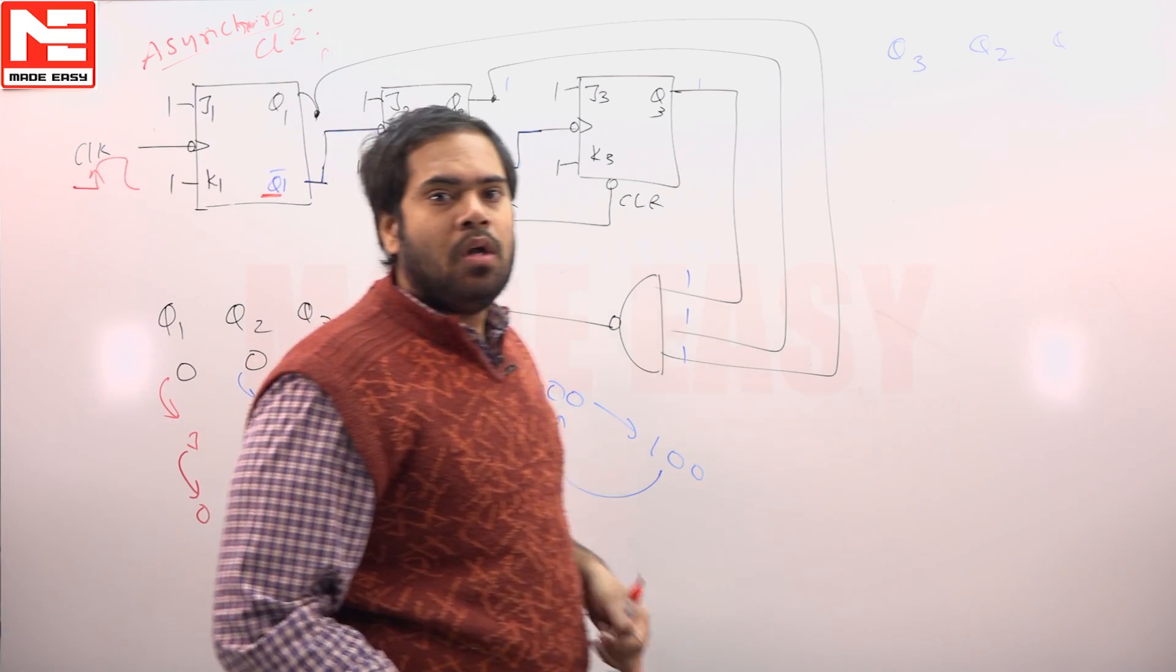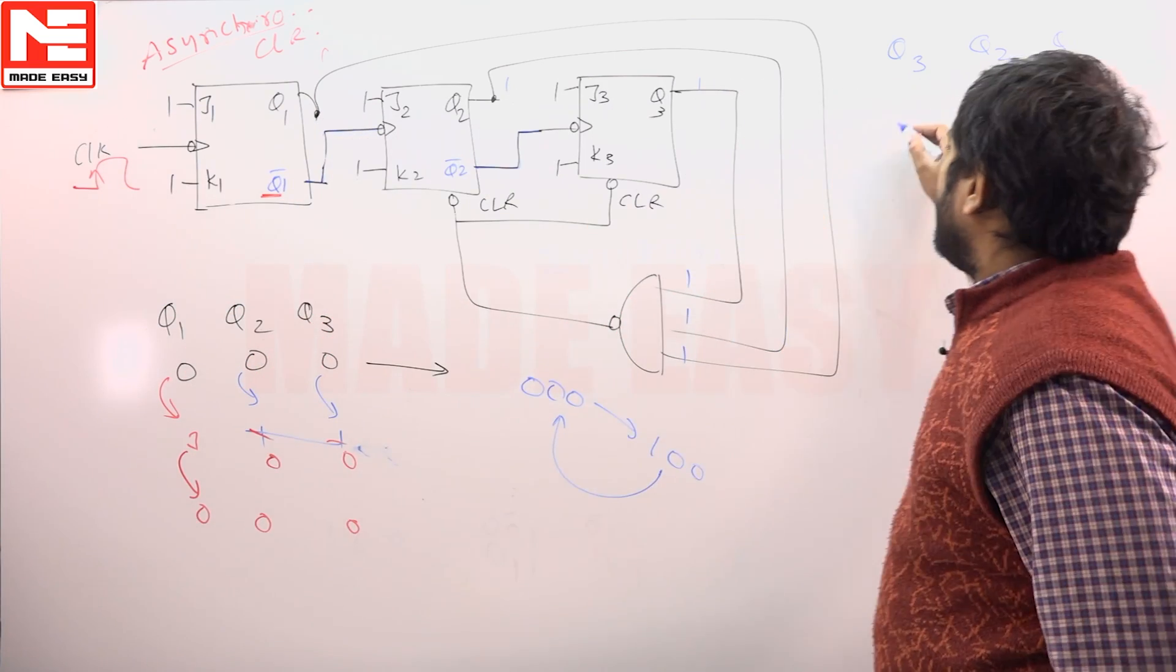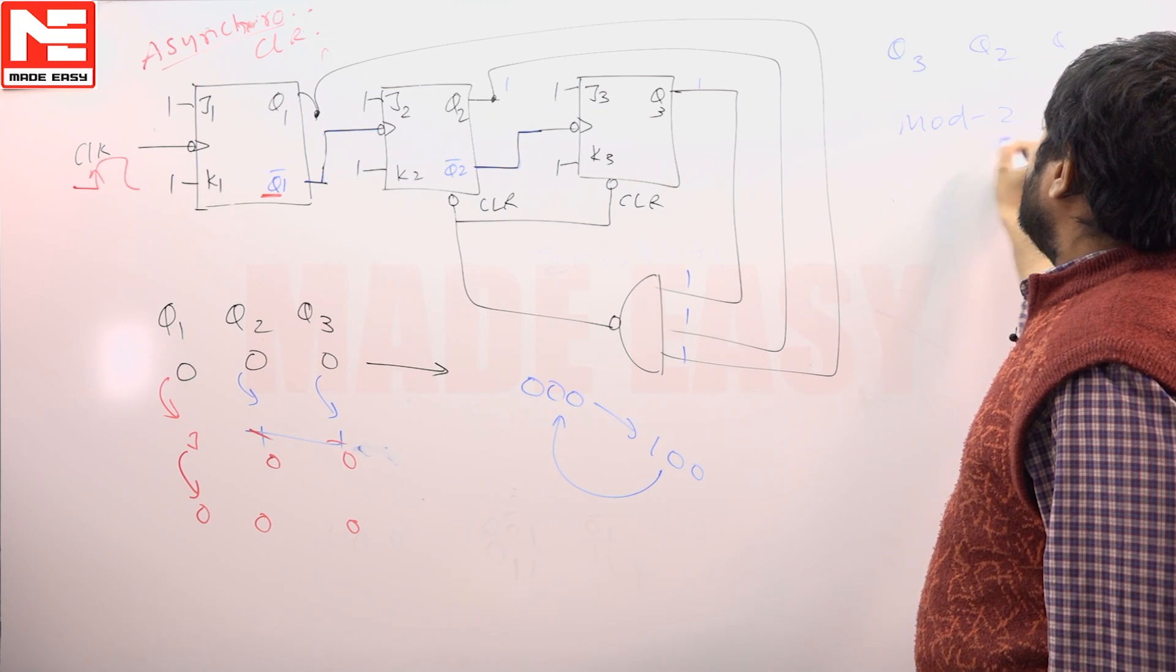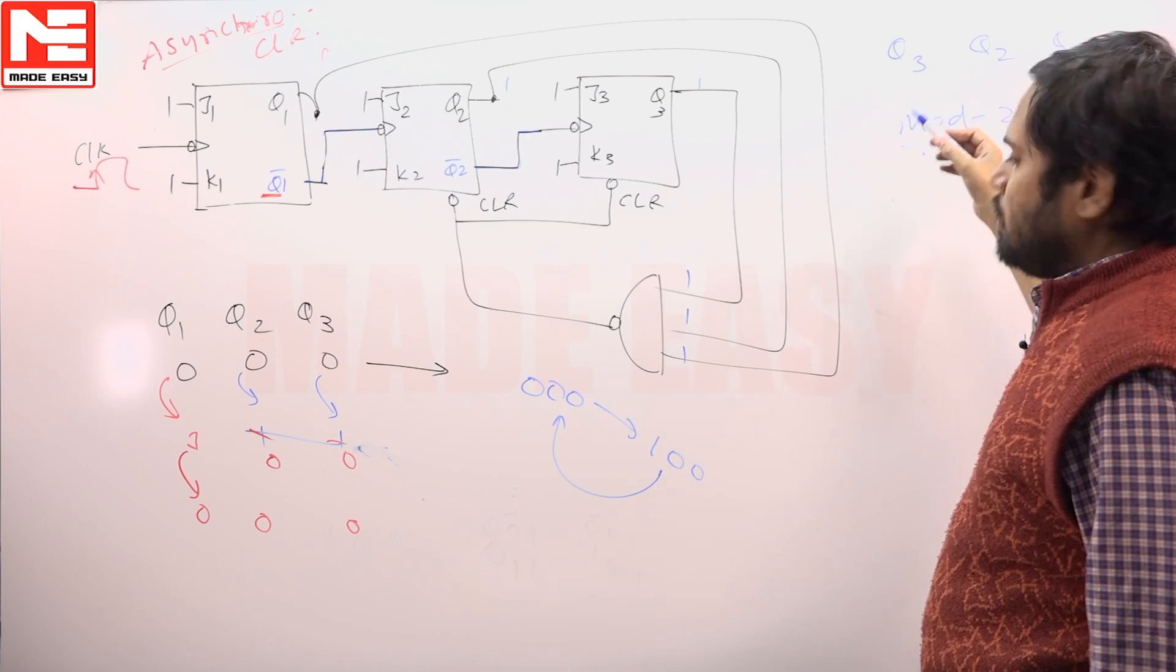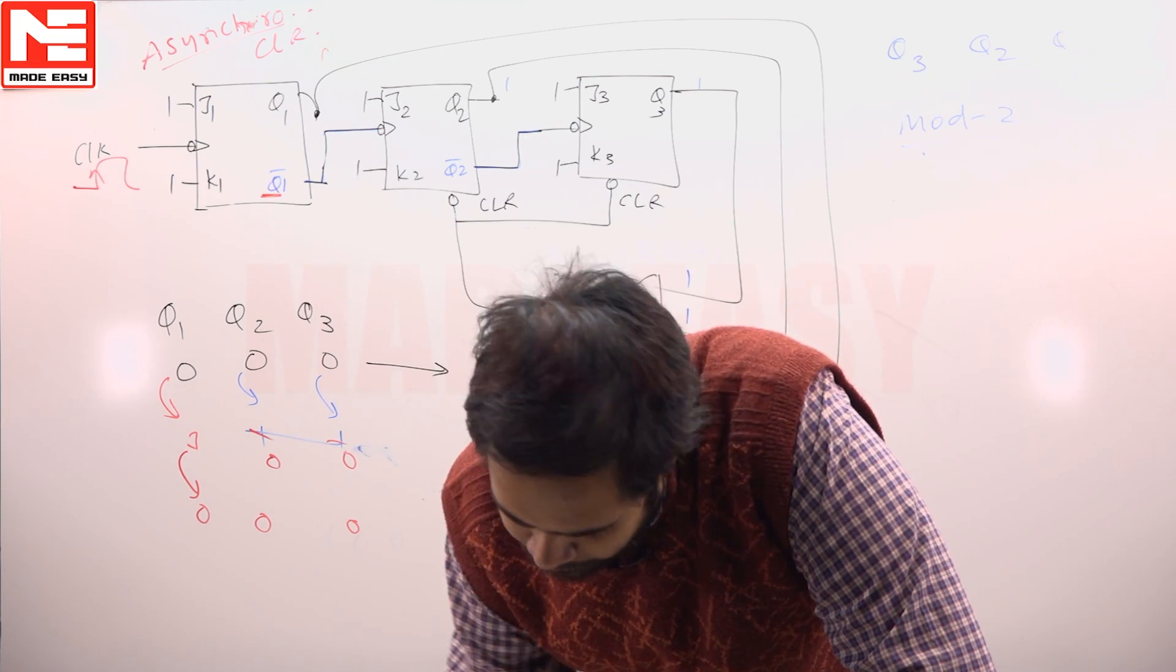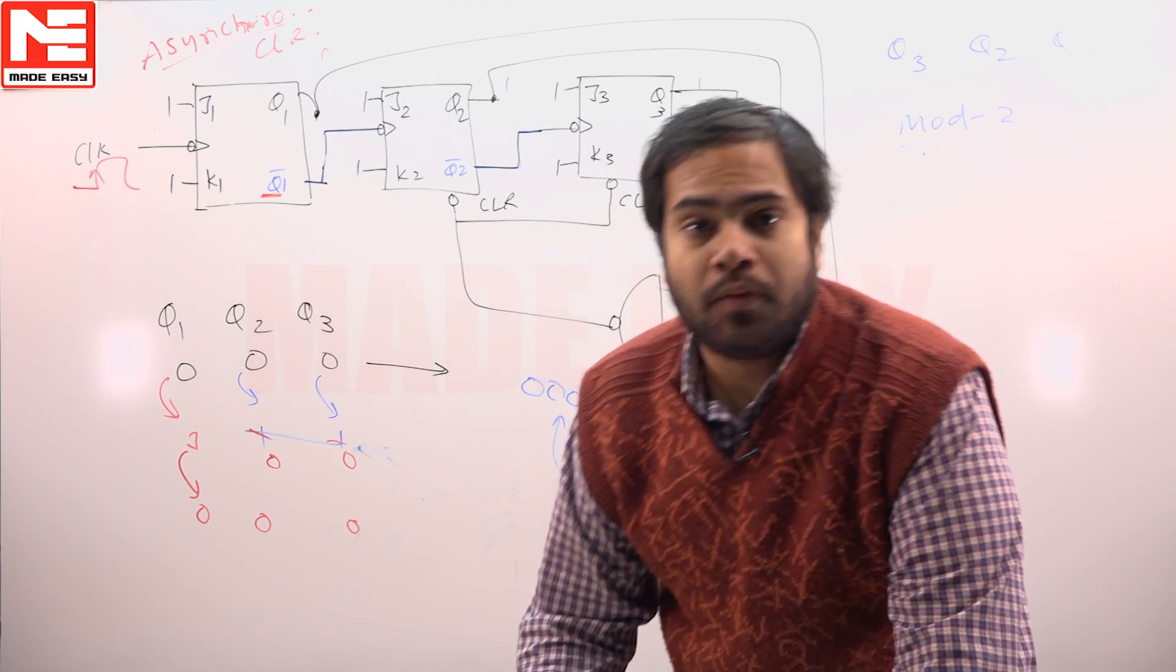That is it. So the mod number for this answer is 2. The answer is simply mod 2. Excellent question. The answer is mod 2. So you can just look here. What are the values you are going to get? The mod number is only 2.